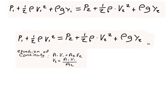The problem gives us the initial pressure, the final pressure, y2, and we know the density of water and gravity. The only unknowns are the initial and final velocities. So we need to use the equation of continuity to express one velocity in terms of the other, leaving only one unknown.